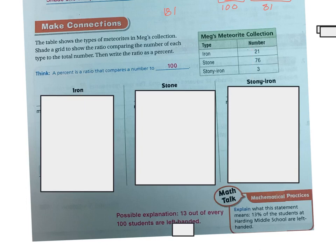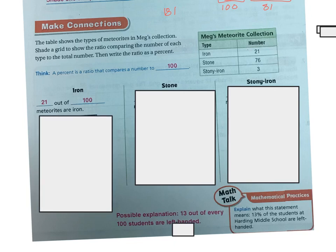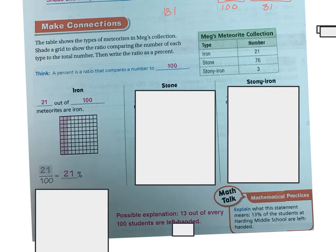So iron, there's my iron is 21. That means 21 out of 100 are iron. And then I can draw it as 21 over 100, 21%. And if I count, there should be 21 little squares drawn here. You can do the same for stone and the same for stony iron.